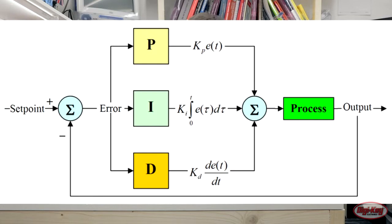A PID controller has three different areas: the proportional, integral, and differential. What it does is it takes an error signal from a current process — let's say something like the speed of a car — and it sees where it wants the speed to be, let's say 40 miles an hour, but it sees that you're actually only doing 30 miles an hour. So it takes the difference, which would be 10, and puts this error value into three different blocks.